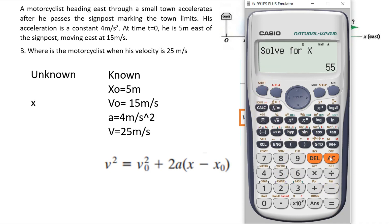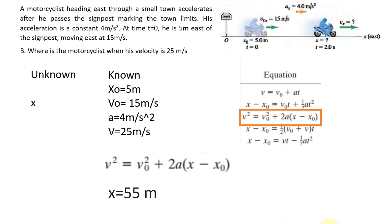This gives us a result of 55 m. Therefore, his final position when his velocity is 25 m per second is at 55 m.